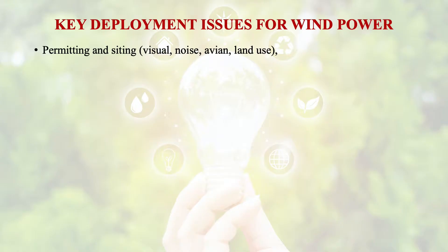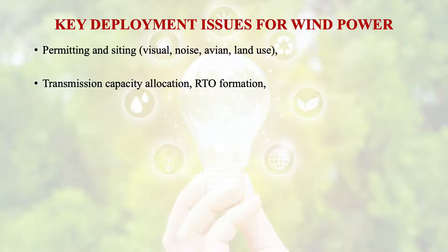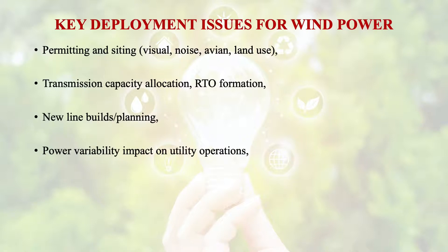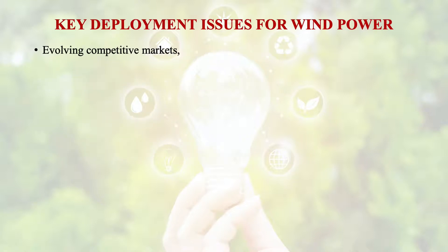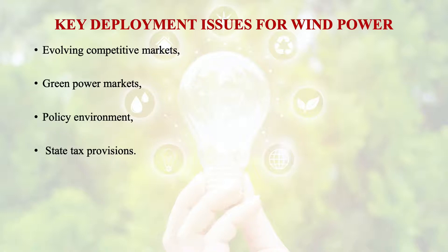What are the deployment issues for wind power? Permitting and siting include various disadvantages such as visual impact, noise, avian concerns, and land use. Transmission capacity allocation is another key deployment issue. New line builds or planning, power variability impact on utility operations, and evolving competitive markets are also issues. Green power markets, policy environment, and state tax provisions are some of the key deployment issues for wind power generation.